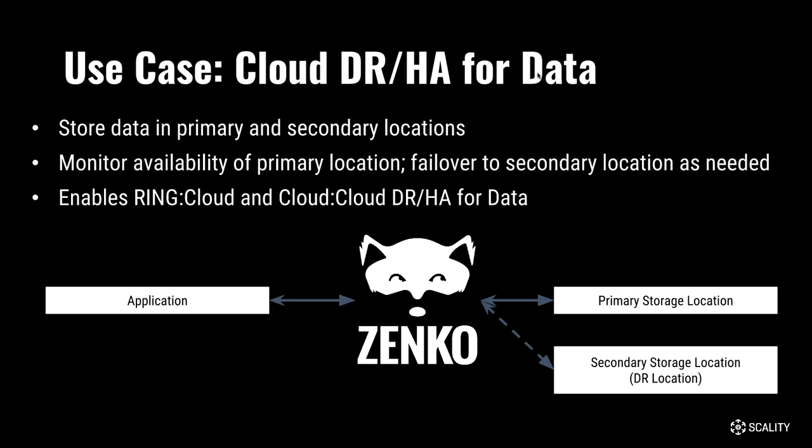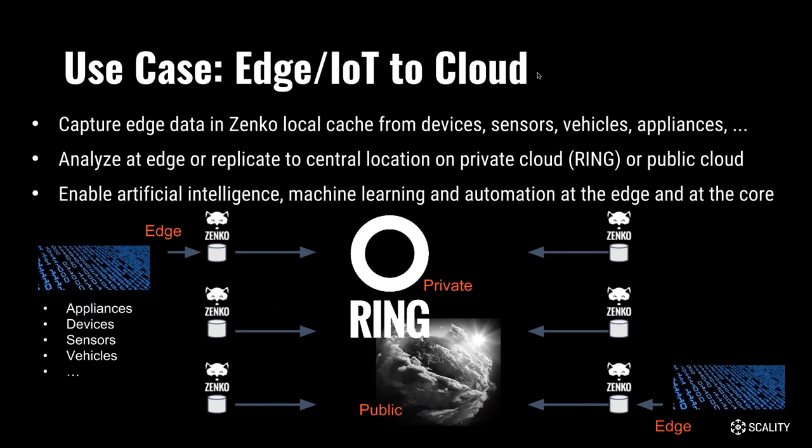Another clear usage is protecting your data — storing in a primary location and sending it to a secondary location. Most public clouds have cross-region replication; AWS calls it CRR. You send data to a second region in hopes the second region won't be down at the same time as your primary. We've found that putting primary data in one location and secondary data in a cheaper location gives very high durability for relatively low cost, and Zenko enables that.